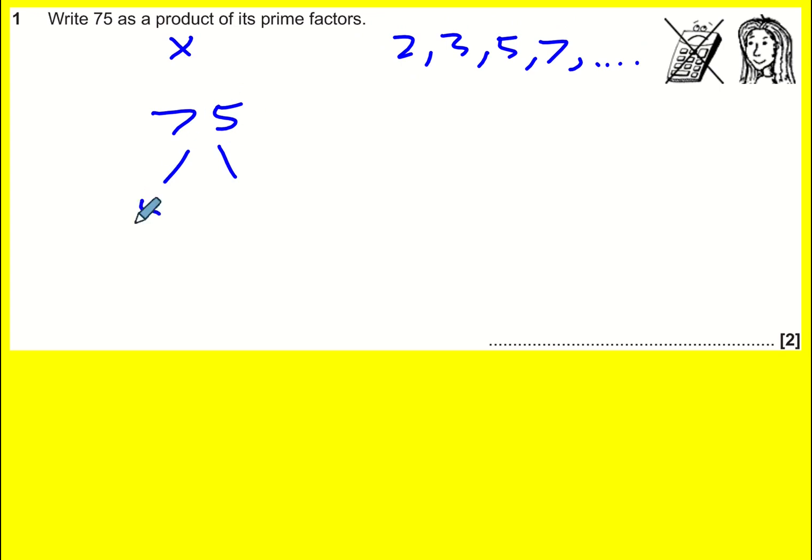So because it ends in a 5, I know that 5 goes into it, and then I can do 5 into 75, which goes once remainder of 2, 5, so it's 5 times 15 gives 75. Circle the 5 because that is a prime here.